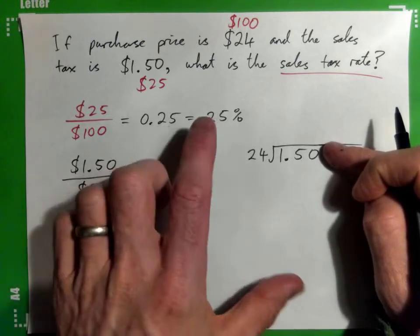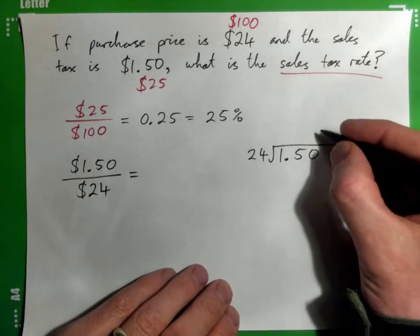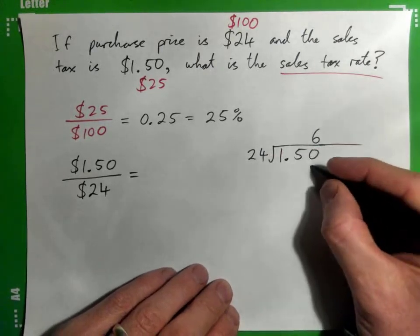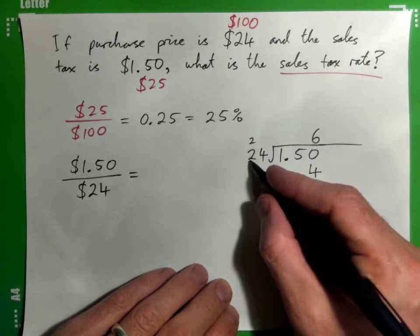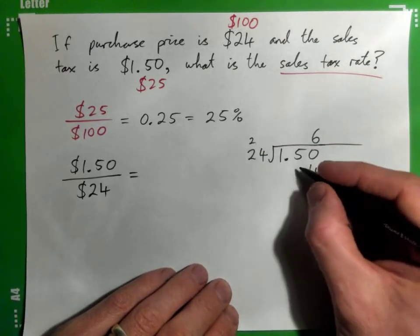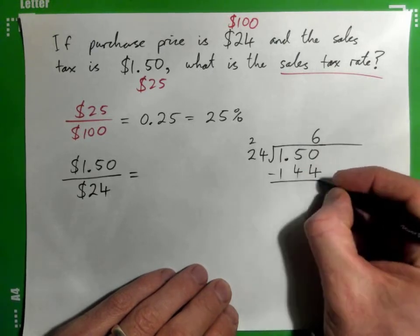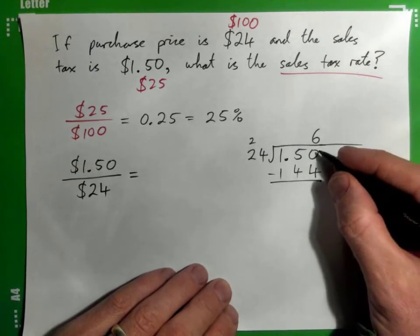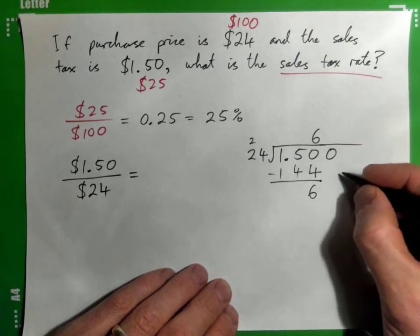Good guess. Yeah, 6. 6 times 4 is 24, carry 2. 6 times 2 is 12, and 2, and then subtract. And we get 6, right? Maybe bring down another 0.